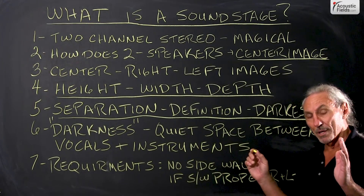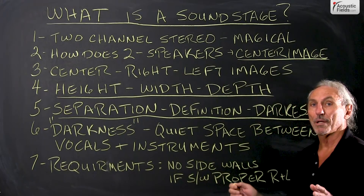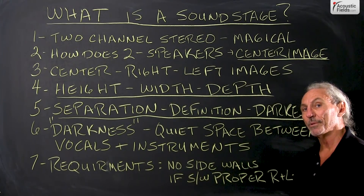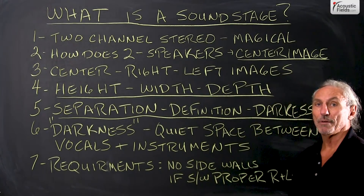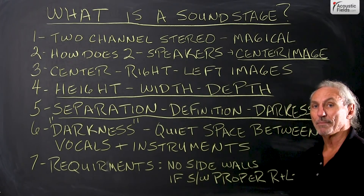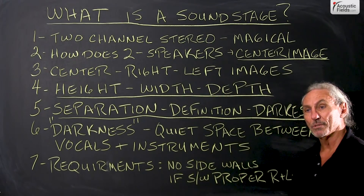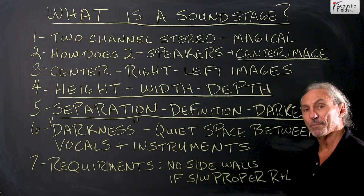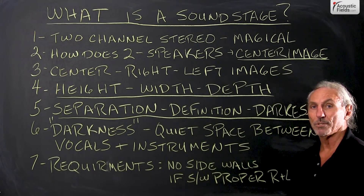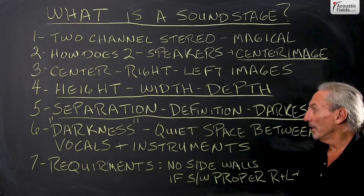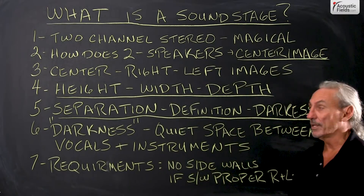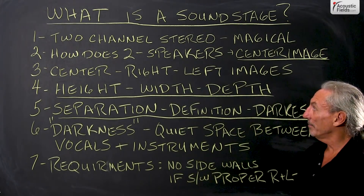You've got to have the low frequencies managed correctly. You have to have the proper rates and levels of absorption for the mids and highs, and if you're using diffusion you have to have the right prime number sequence for distances from speakers to listening position, and from listening position to the back walls, side walls, and ceiling. So it's all kind of important.